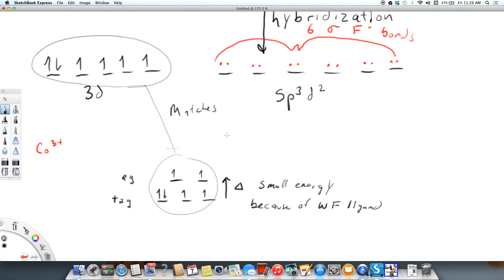We would also say that the delta or the crystal field splitting energy is less than the pairing energy. Another description I would like to give is that this is considered high spin. That is a high spin structure.